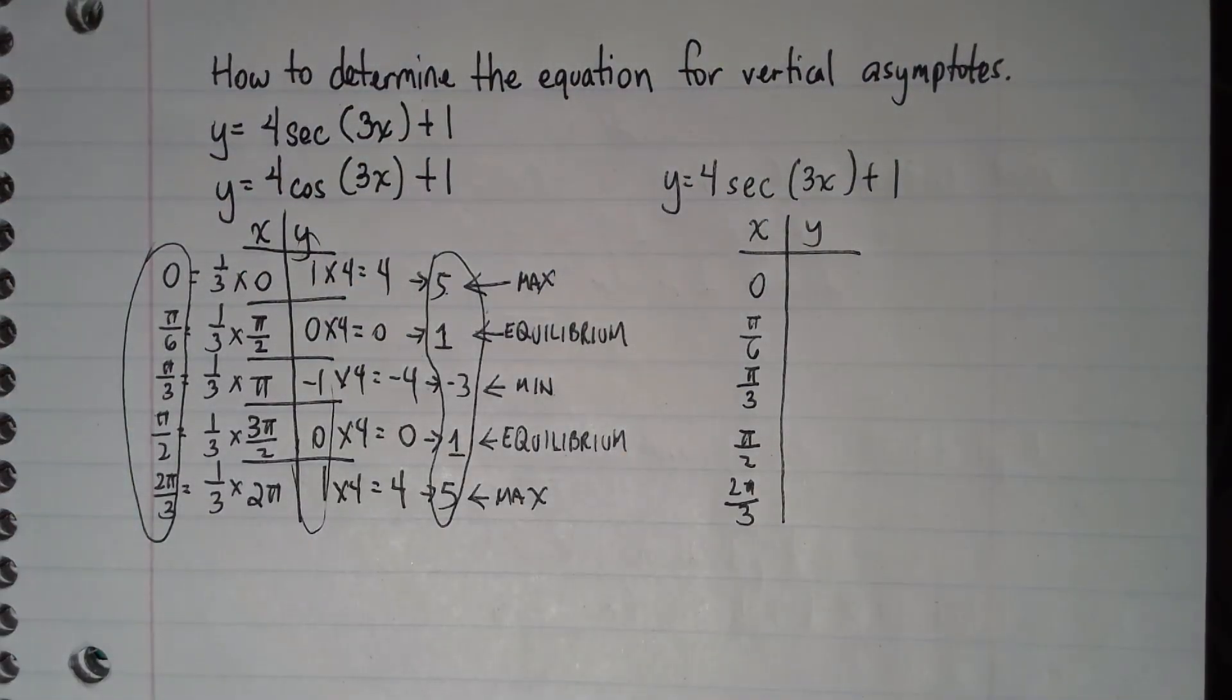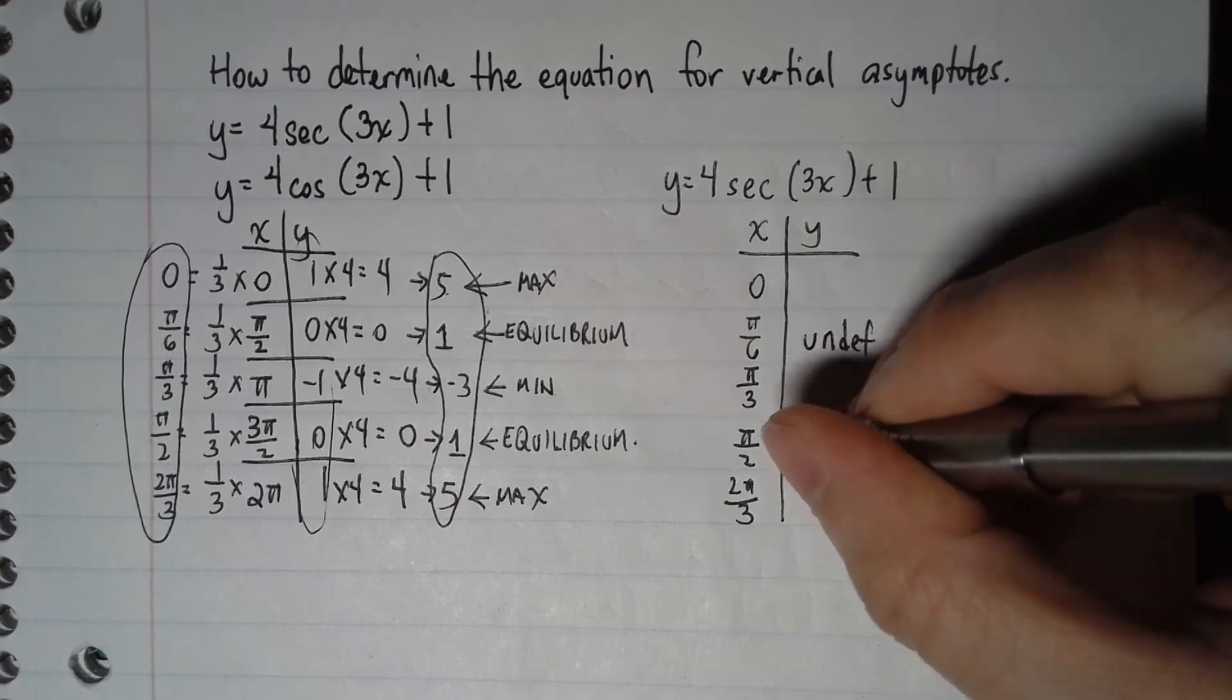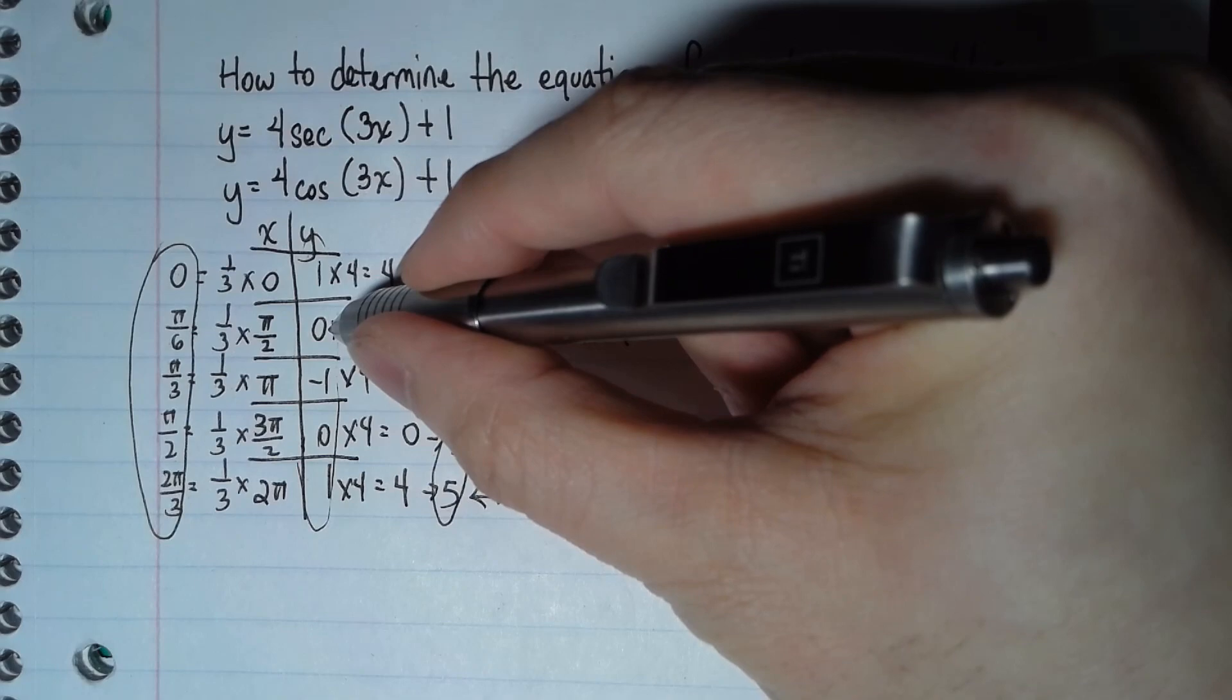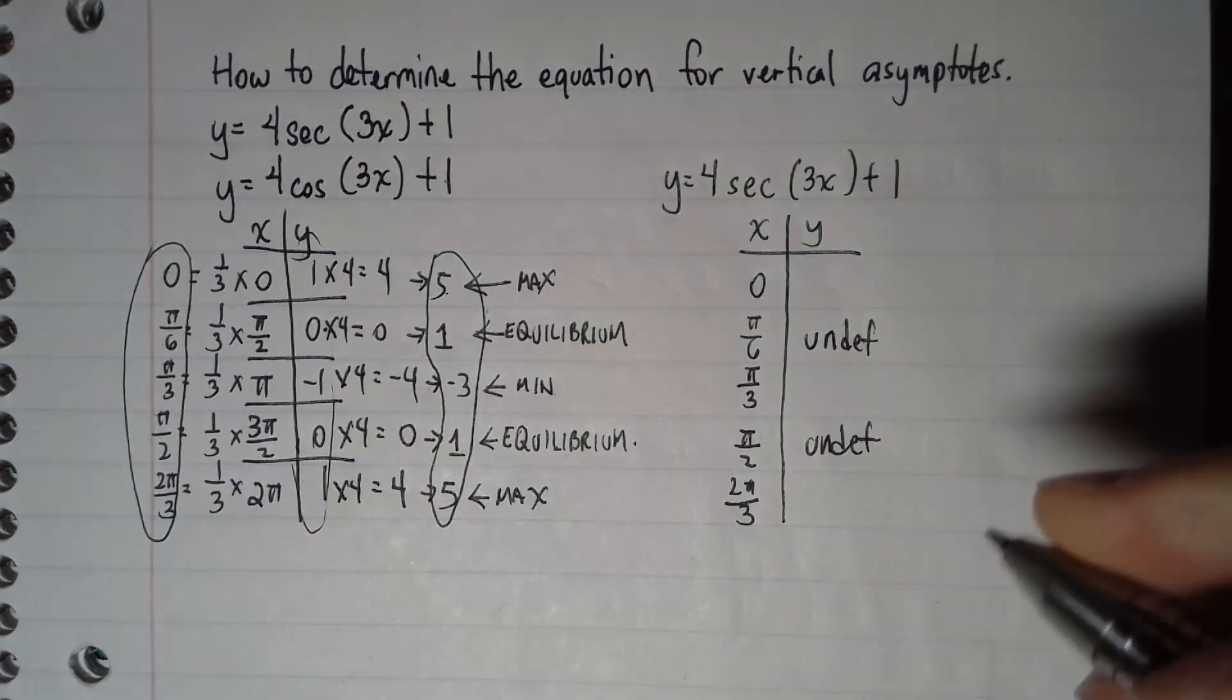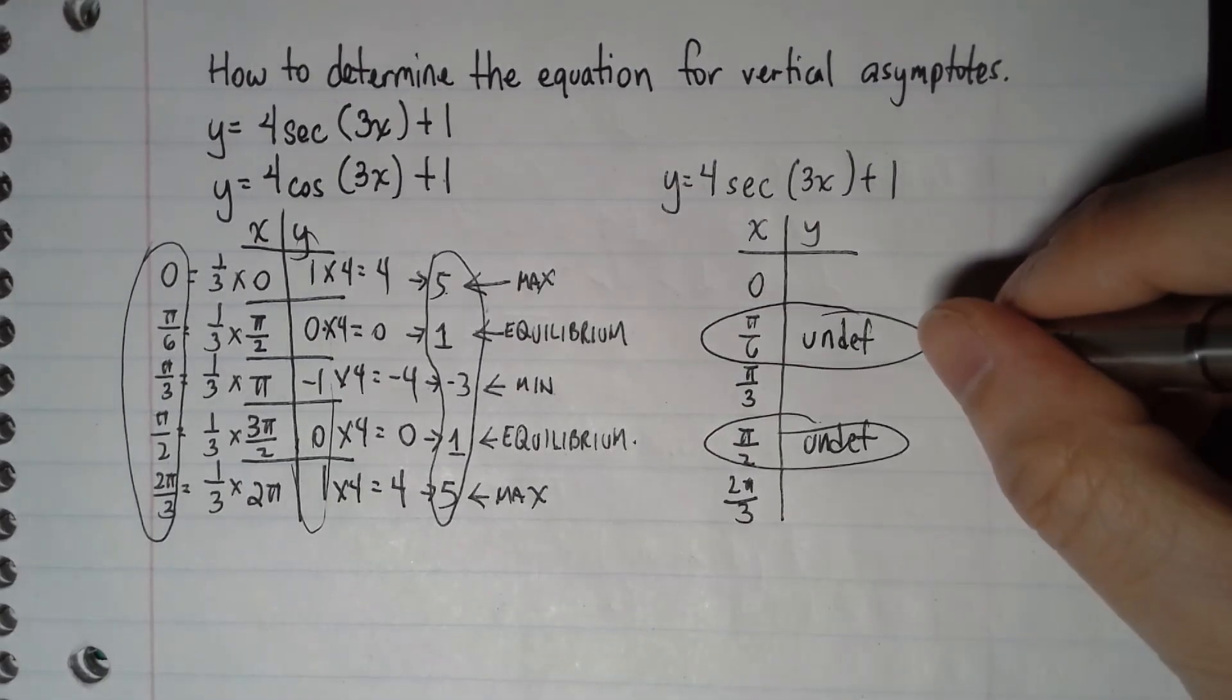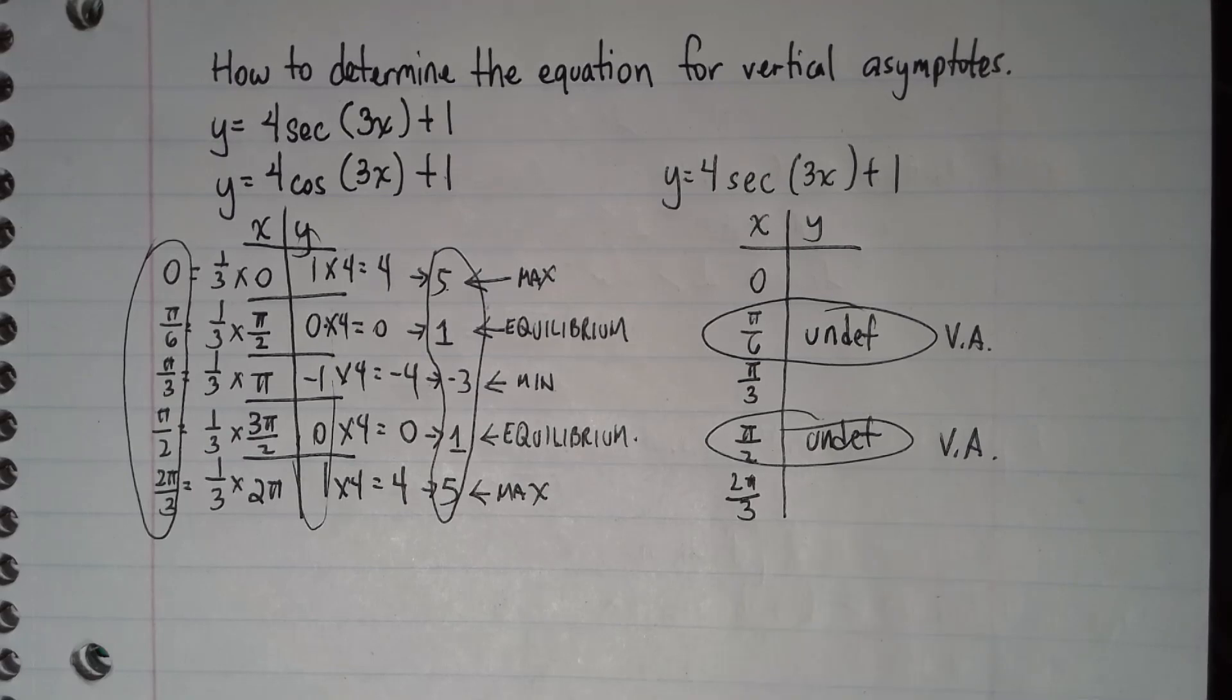Here, before all the transformations, it doesn't matter. We can figure out which one's the vertical asymptote: wherever you see the equilibrium, that equilibrium is when you get your undefined. Because right here if you do the reciprocal of zero, that becomes undefined. These are your vertical asymptotes. Wherever you see equilibrium, they will always become your asymptotes for secant and also cosecant.